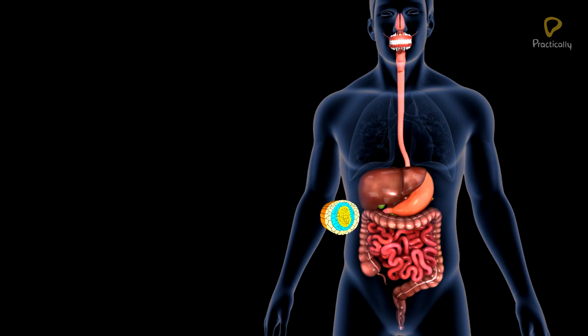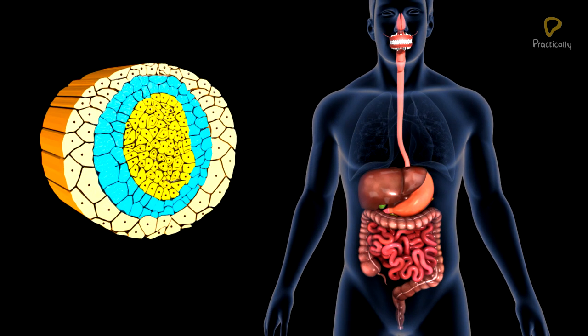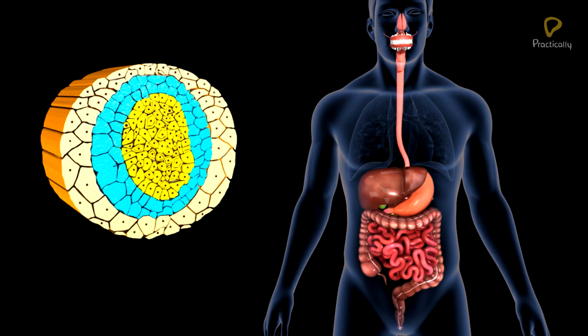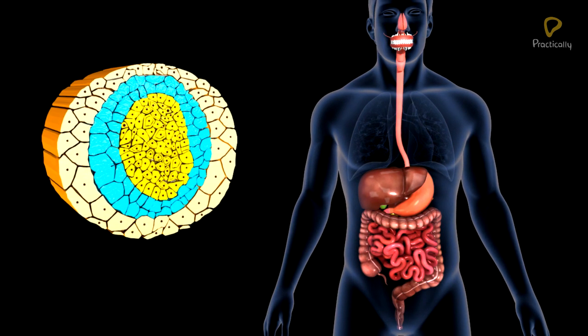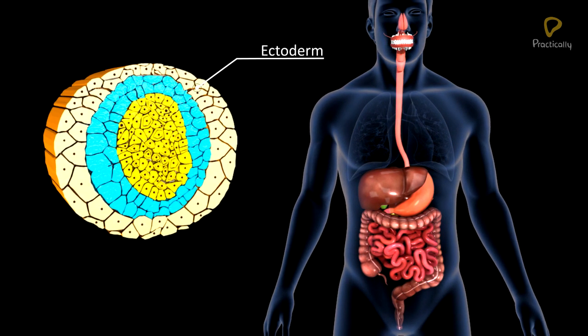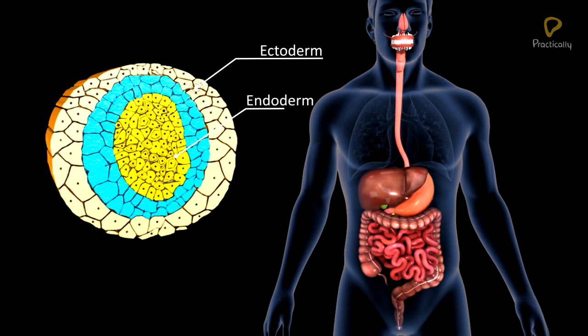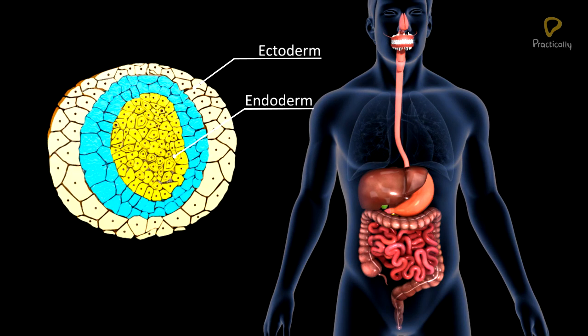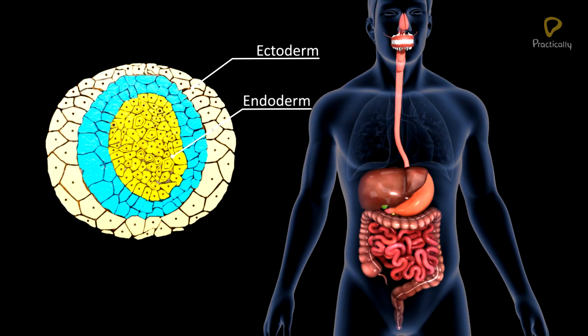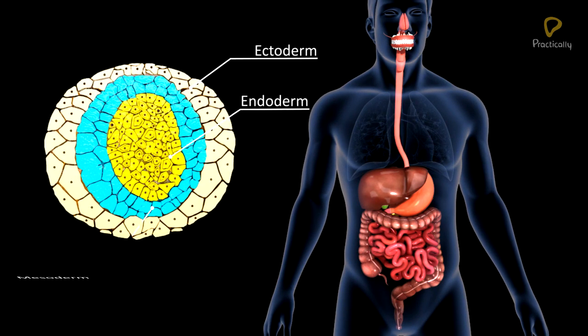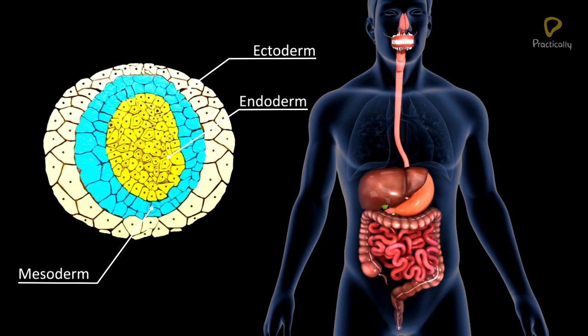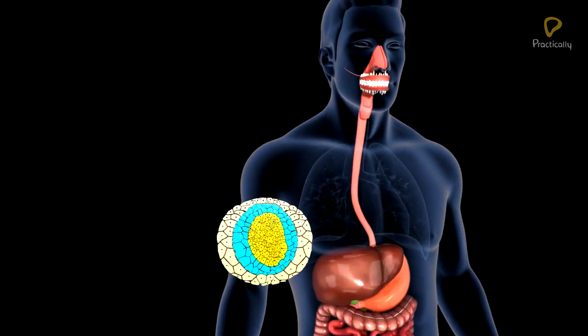The inner lining of the alimentary canal is derived either from the ectoderm or endoderm in different regions. The remaining layers are derived from mesoderm.